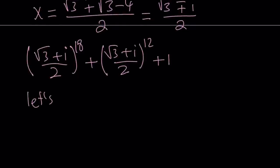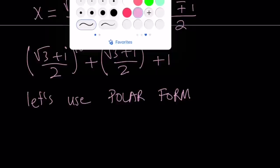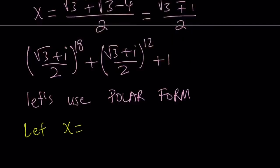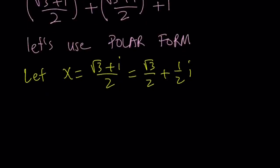Let's use polar form. What is polar form? The polar form is basically writing a complex number using trigonometry. So let x equal square root of 3 plus i over 2. So now I'm going to turn it into trigonometric form. I can just separate these: square root of 3 over 2 plus 1 half i. And now, before I look for any number, how about finding the modulus?